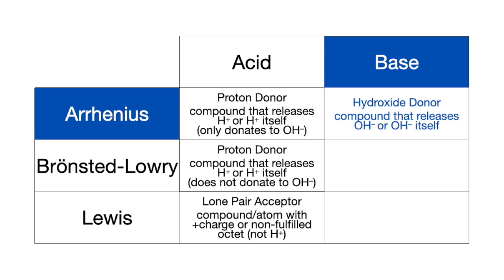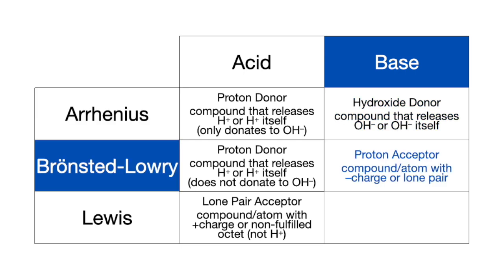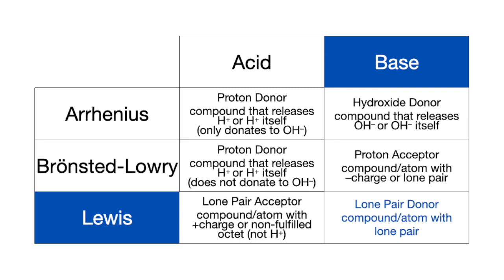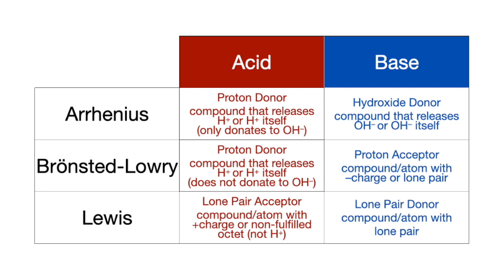Arrhenius bases are hydroxide donors meaning they release OH- groups. Bronsted-Lowry bases are proton acceptors, meaning they are compounds with negative charges or lone pairs that are highly attractive to protons and may even form bonds with them. Lewis bases are lone pair donors, meaning atoms or compounds with a lone pair to form a bond with a Lewis acid.